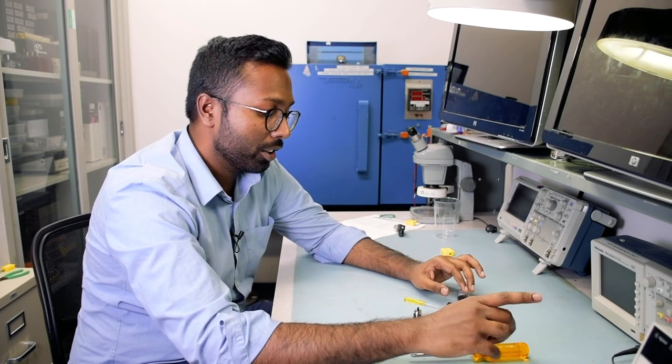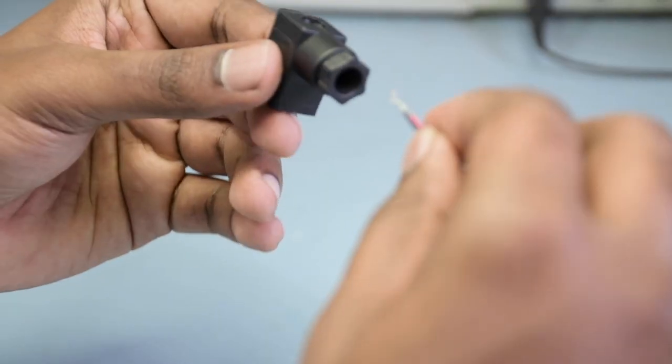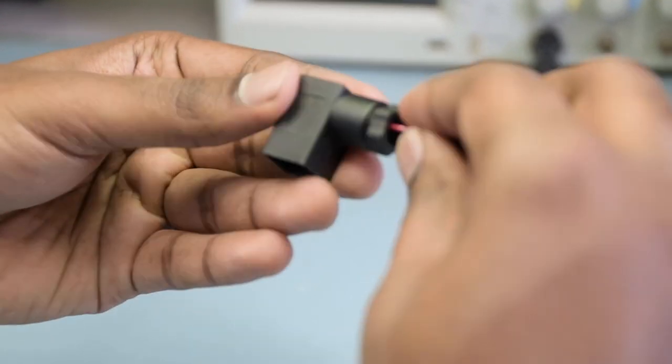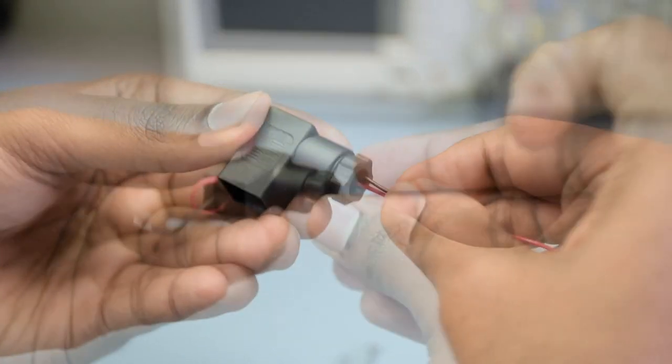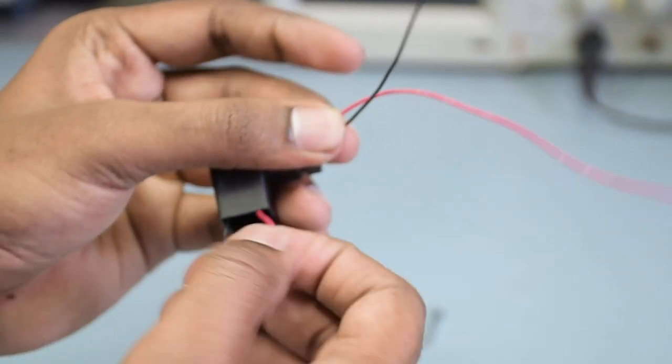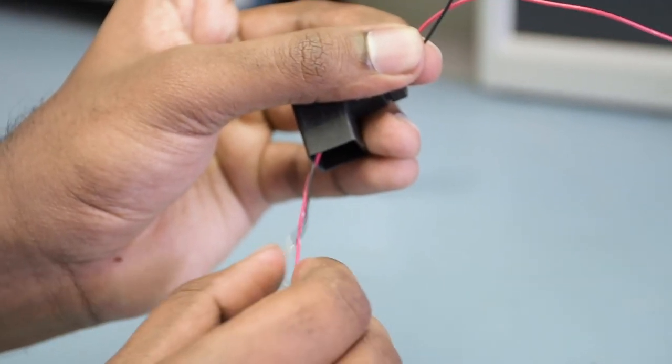Now, before we connect the wires to the terminal block, here's a tip to make your life easier. Take these two wires and run them in through the DIN cap like so. Once you feed them in through the cap, now go ahead and wire the red and the black to the terminal block.